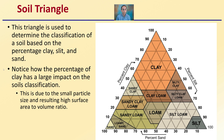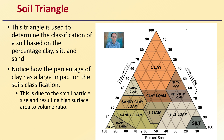The soil triangle is used to determine the classification of soil based on the percentage of clay, silt, and sand. Notice how the percentage of clay has a large impact on the soil's classification — clay classifications make up the vast majority of this triangle. This is simply due to the small particle size resulting in a high surface area to volume ratio.